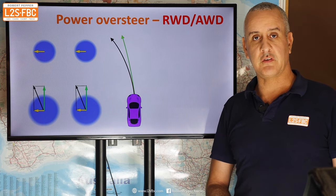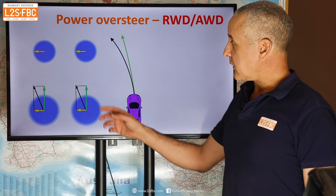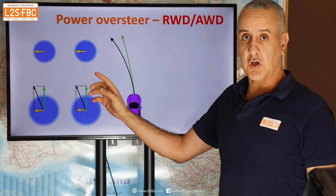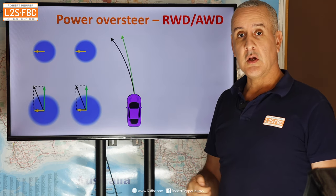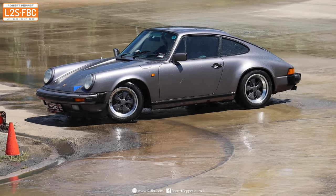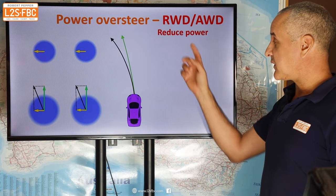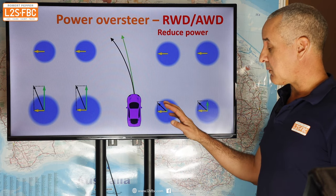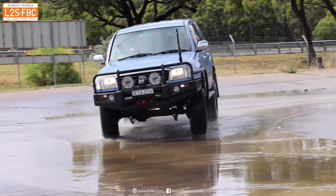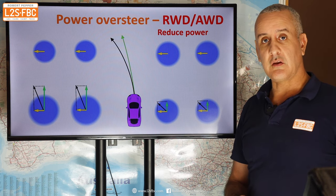Here's power-on oversteer, which is oversteer caused by an excess of power. You only get this in rear and all-wheel-drive vehicles, not front-wheel-drive. The traction circles at the back are larger than at the front because we are accelerating. The amount of grip required for turning is pretty much the same front and rear, but the rear-drive demand at the back is this large green arrow — we're demanding a lot of acceleration grip and that has overwhelmed the available grip. The fix is simply to reduce the power. Because we're no longer accelerating, we reduce the size of the traction circle slightly, but we massively reduce the traction demand at the rear, bringing us back inside the traction limit and eliminating the oversteer.